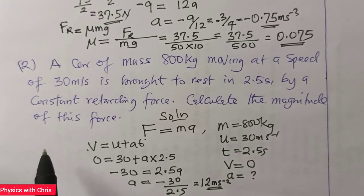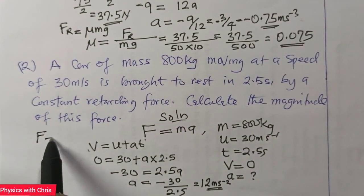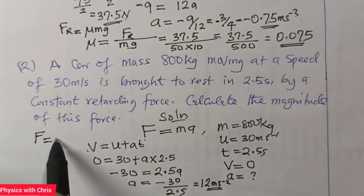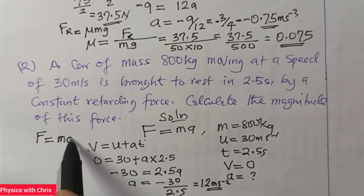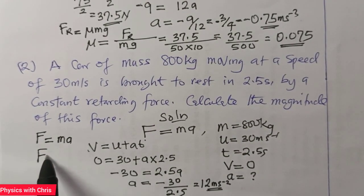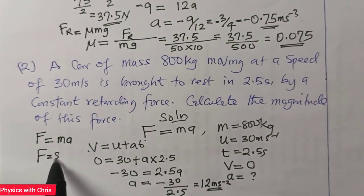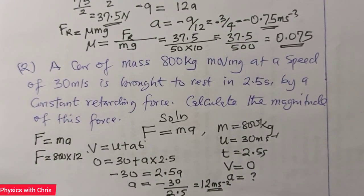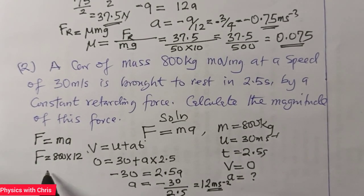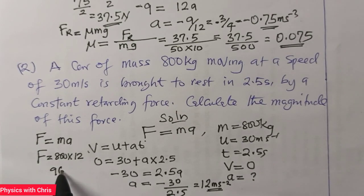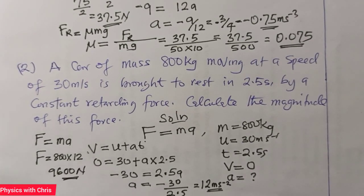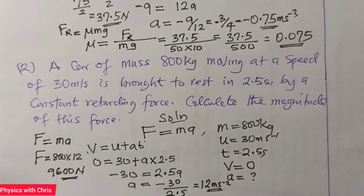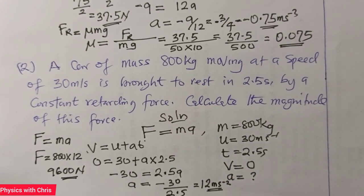The constant retarding force F from Newton's second law is given by mass times deceleration or retardation. That gives me 800 × 12 = 9,600 Newtons. So that is the constant retarding force acting on the car as it is brought to rest.